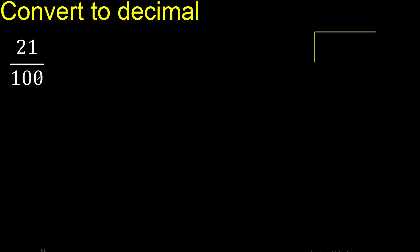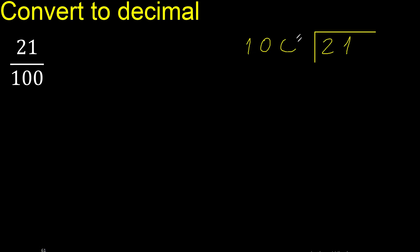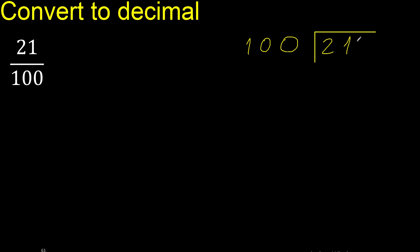21 divided by 100. 21 is less than 100, therefore complete with 0. Here the decimal point is placed — 0 point — is not less.